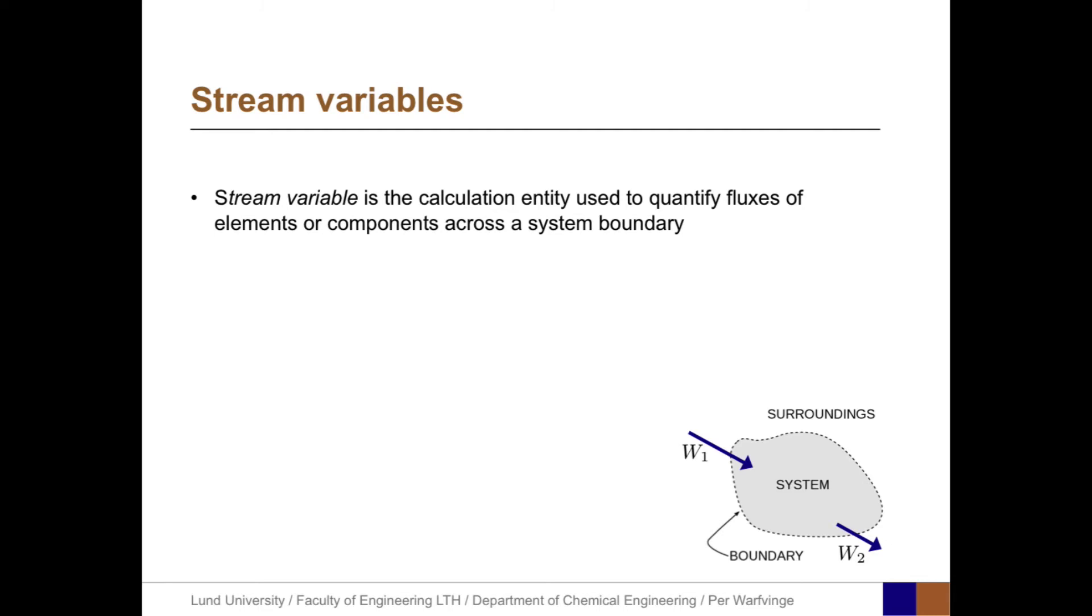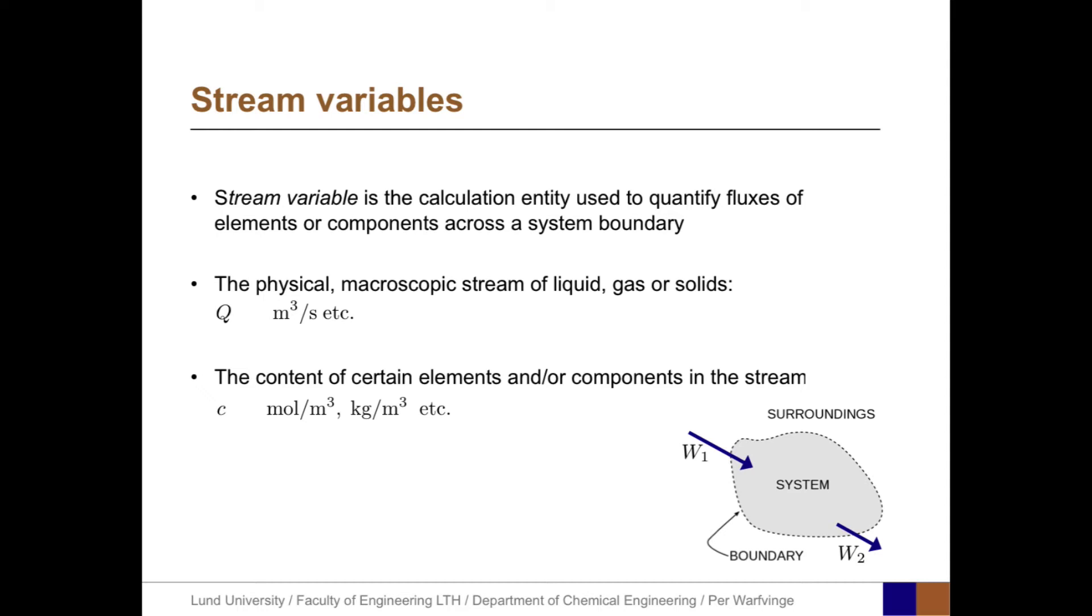When we make process calculations, we use stream variables. A stream variable is the calculation entity used to quantify fluxes of elements or components across a system boundary. For example, if we have a physical macroscopic stream of liquid, gas, or solids, we may denote that Q, with units like cubic meters per second. This stream contains elements, components, or inerts. The content is denoted C for concentration, in mole per cubic meter, kilograms per cubic meter, etc.